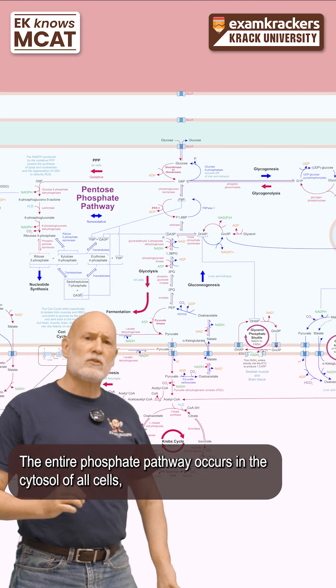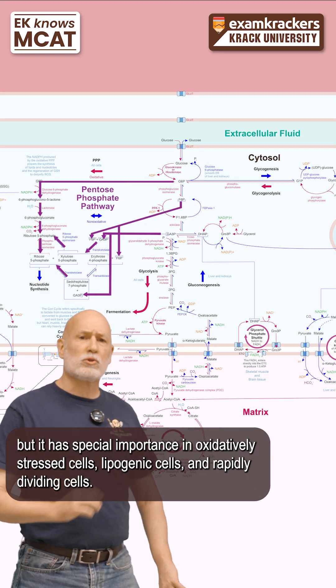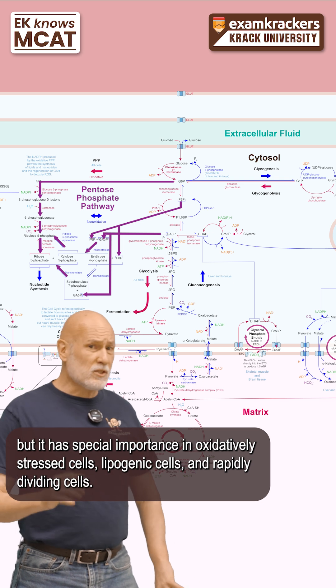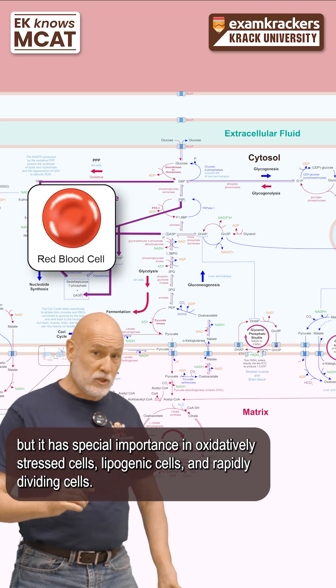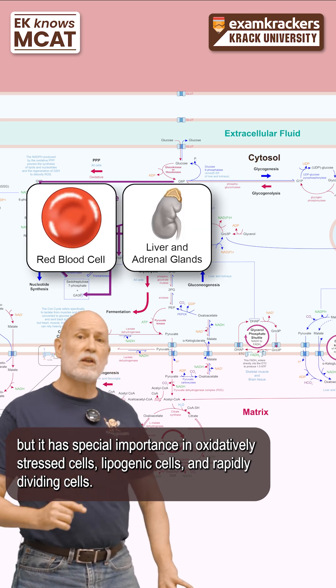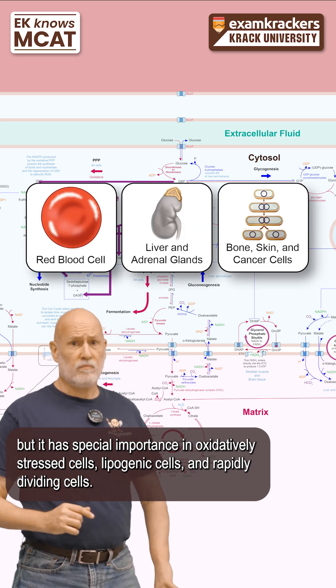The entire pentose phosphate pathway occurs in the cytosol of all cells, but it has special importance in oxidatively stressed cells, lipogenic cells, and rapidly dividing cells.